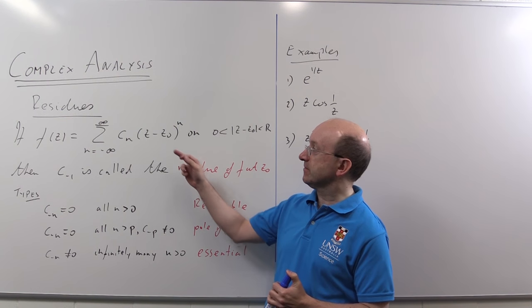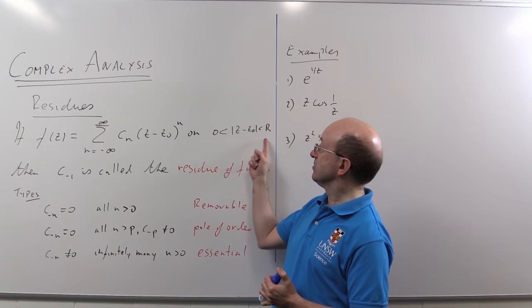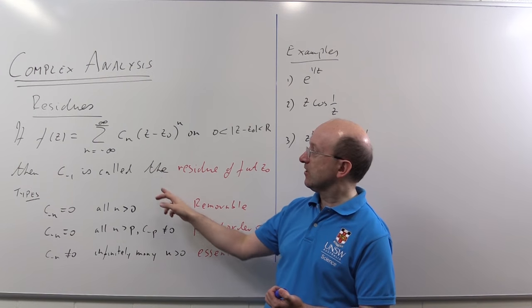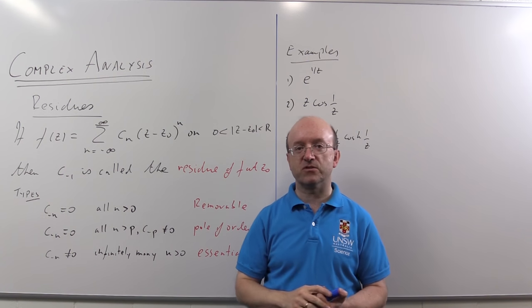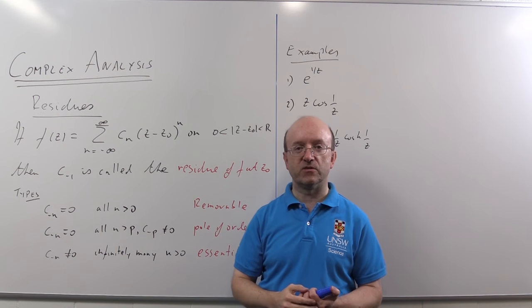So if we have a function that is analytic on some punctured disk, so 0 < |z - z₀| < R for some positive R, then the coefficient of (z - z₀)^(-1) is known as the residue of f at z₀.